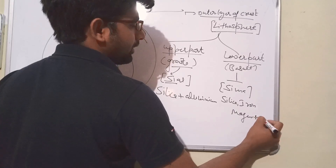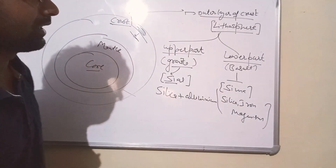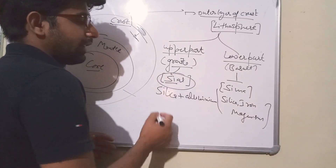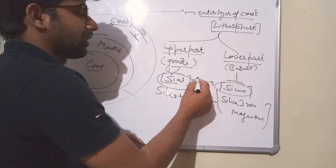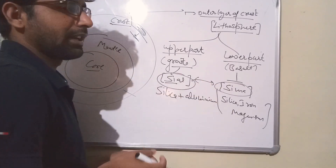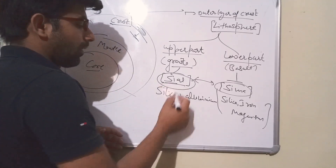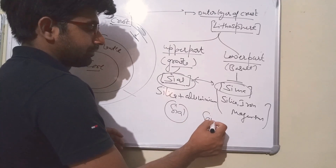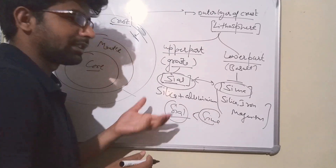The upper part of the crust is made of SIAL (silicon and aluminum) and the lower part is SIMA (silicon and magnesium). SIAL is lighter compared to SIMA, and their densities are different. You don't need to remember the exact densities, but know that SIAL is lighter than SIMA - SIAL can float, essentially.